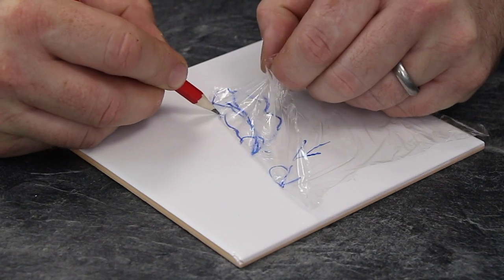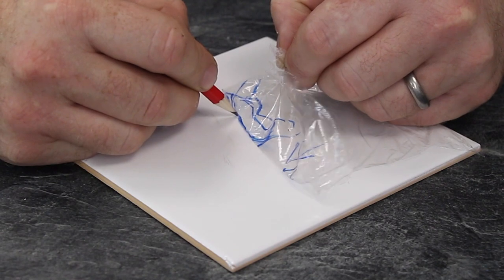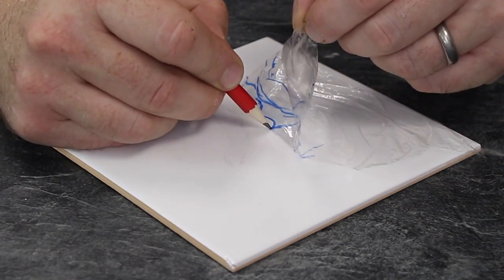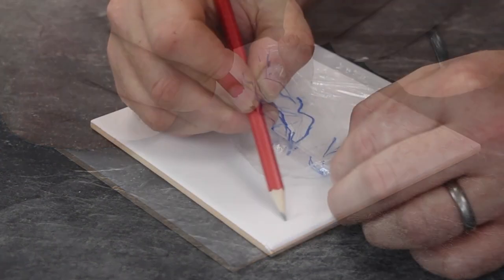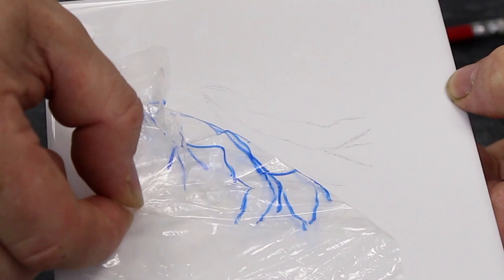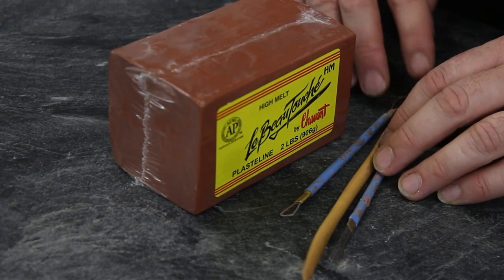You can work out the right angles and orientation, then move the plastic wrap onto a ceramic tile. I'm using a very cheap, simple ceramic tile you can get in hardware stores. I just laid the plastic wrap there.